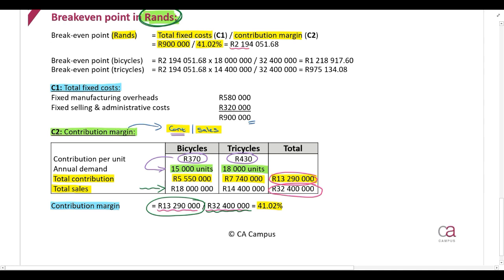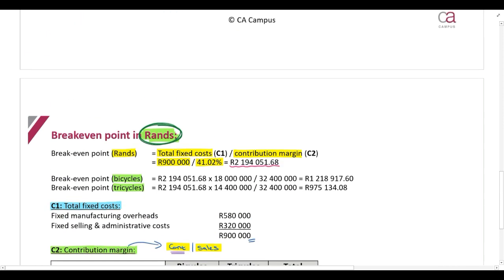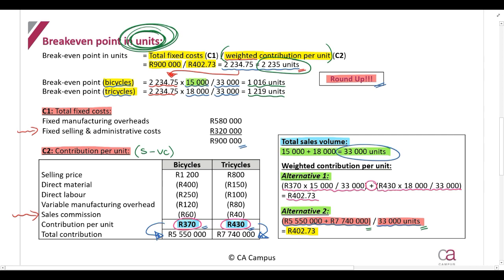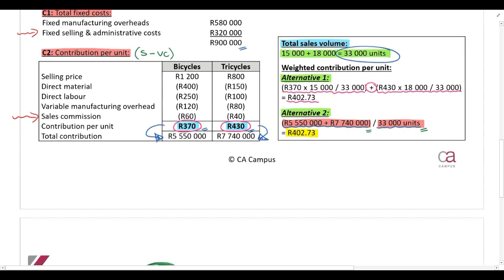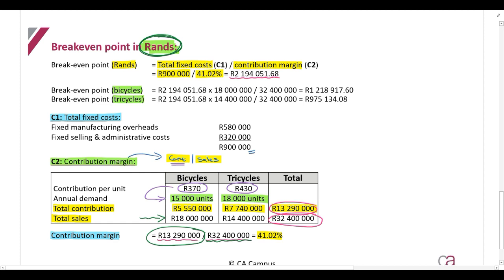We've calculated the total break-even point in rands for the company as a whole, and now need to split it between the two products. When we calculated the break-even in units, we used expected sales in units for the split. For the break-even in rands, use the rand value of expected sales to split the total between products. You already have the rand sales values from the contribution margin calculation — use those for bicycles and tricycles respectively.